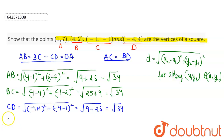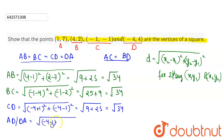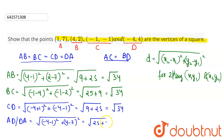The distance between point D and point A: DA = √[(−4 − 1)² + (4 − 7)²] = √[(−5)² + (−3)²] = √[25 + 9] = √34.